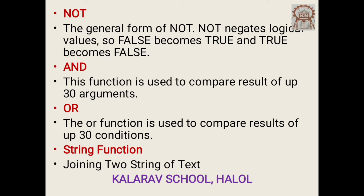The OR function is used to compare the result of up to 30 conditions. The value of OR is true if at least one of the conditions tested is true. For example, consider the formula used in the logical AND function above. If we change the formula slightly — earlier we wanted all three arguments A1, A2 and A3 to be the same — now we want to check if any two of them are equal. This can be written as =OR(A1=A2, A2=A3, A1=A3).